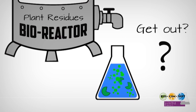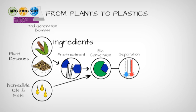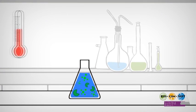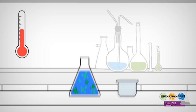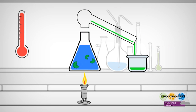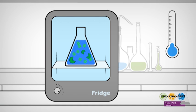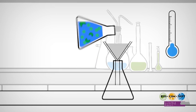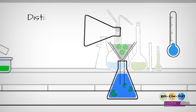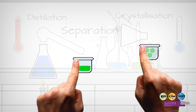The chemicals for bioplastics are produced, but they are swimming in a mix together with the microorganisms. How do we get them out? Separation is the key word. For each chemical there is an optimal separation method. One method is heating up — also known as distillation — where the chemicals evaporate, condense, and are collected. Another method is cooling them down: the chemicals form solid crystals. This is crystallization. With a filter, they are then removed from the mix.